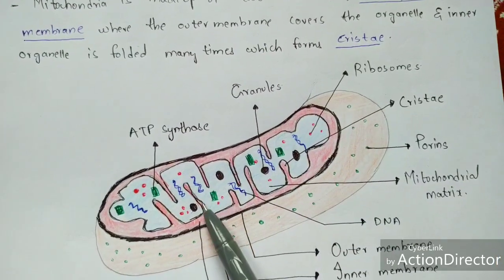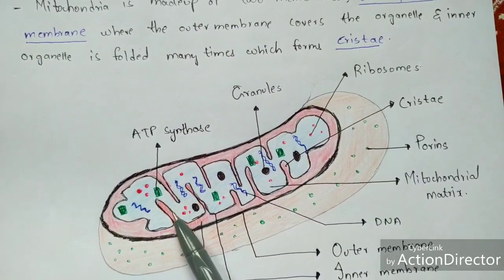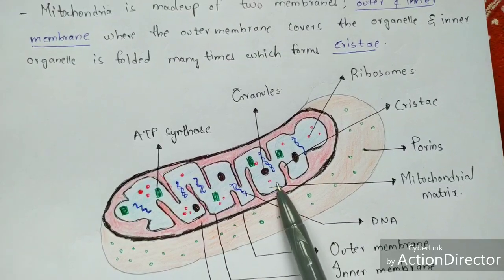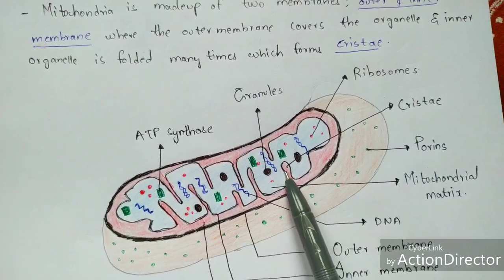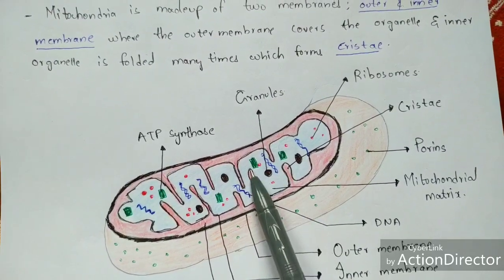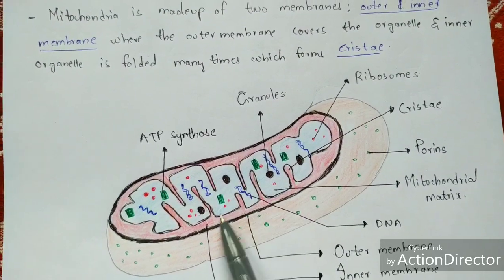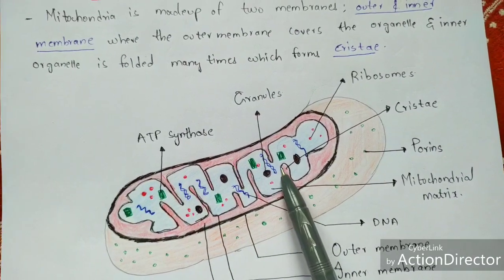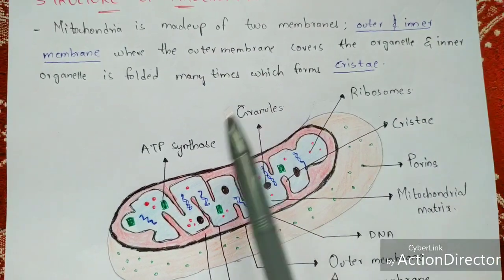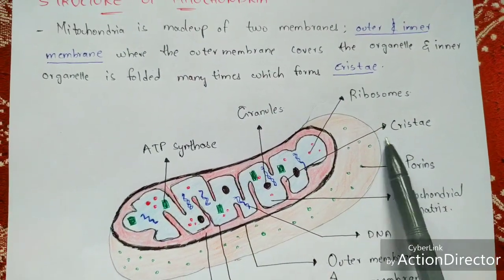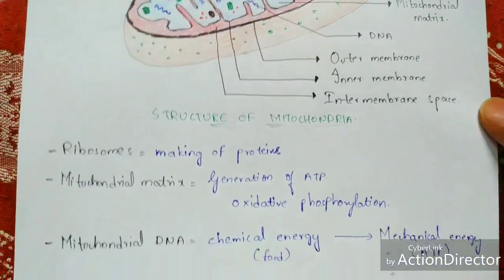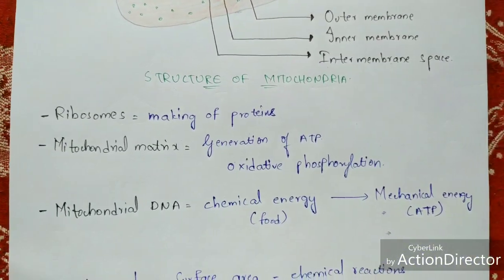Cristae are the folded regions of the inner membrane — projections like this — and they are called cristae. The inner membrane is folded many times to form these cristae.